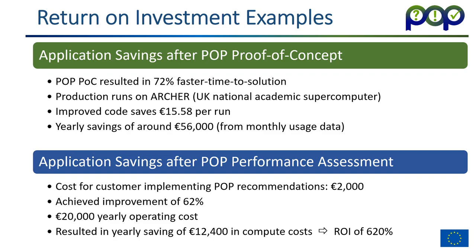In the first example, a proof of concept resulted in a 72% faster time to solution. And because these particular users were using Archer, the UK's national academic supercomputer, the improved code gave a saving of €15.58 per run, which translated to an annual saving based on typical usage data of about €56,000.